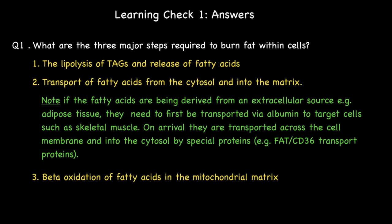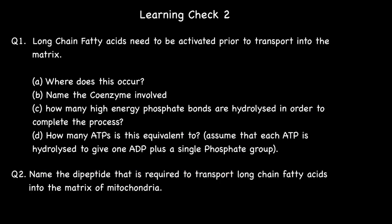Here are the answers to question number one. Let's now move on to learning check number two. Question one from learning check two: long chain fatty acids need to be activated prior to transport into the matrix. A, where does this occur? B, name the coenzyme involved. C, how many high energy phosphate bonds are hydrolyzed in order to complete the process?